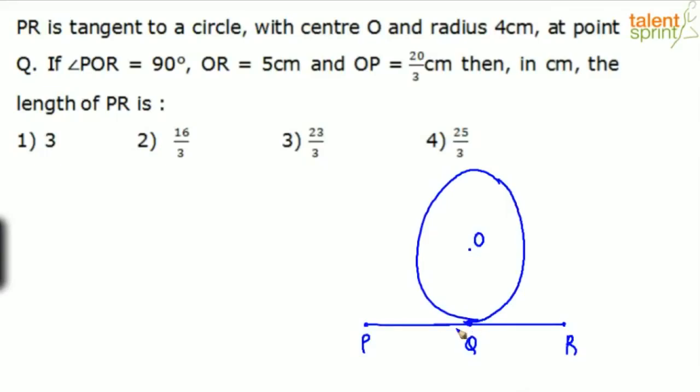Now we know that angle POR is 90 degrees. So let's connect these two and these two here. Angle POR is 90 degrees. This is given as 90 degrees. And OR is 5 cm. So this is 5 cm here and OP is 20 by 3 cm.